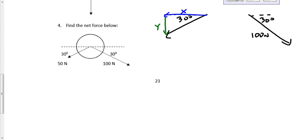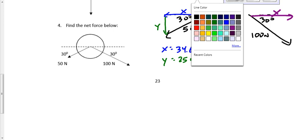x is going to be found by the cosine function. It's going to be 50 cosine 30. That gives me a value of 34.641. And the y component is going to be just 25 because it's 50 sine 30 degrees. Now for this one, let's use a couple different colors here.